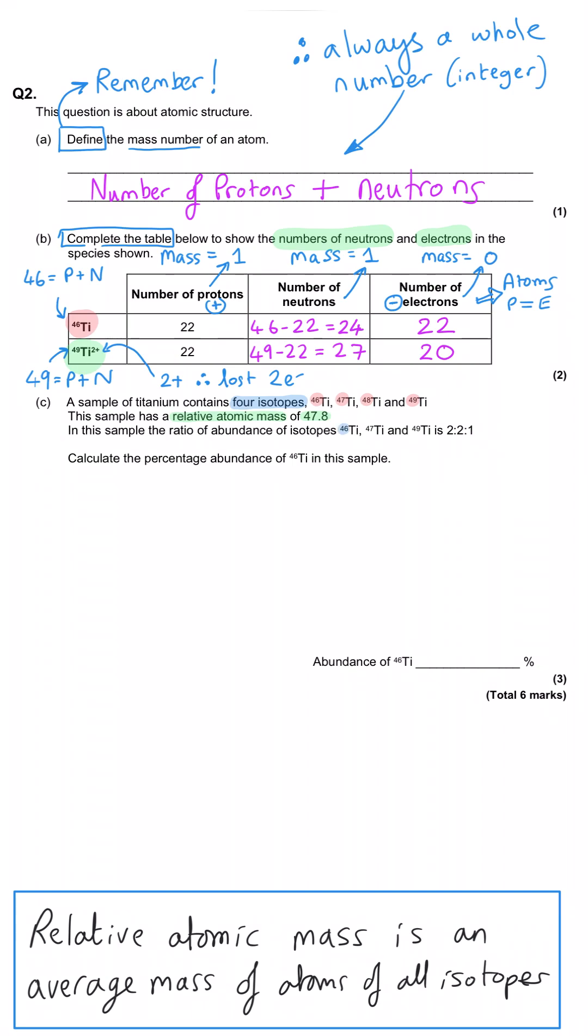We're told that the ratio of abundances of the isotopes of 46 to 47 to 49 is 2 to 2 to 1, and we're being asked to calculate the percentage abundance of titanium-46 in this sample. Now, this seems strange because we've not been told anything about titanium-48, but it is easier in this instance to assign each part of this ratio a letter. Let's just pick n for number. So the ratio of titanium 46 is 2n to 2n to 1n. And then since percentages are out of 100, the abundance of titanium-48 can be taken to be 100 minus these 5n's that we've used so far.